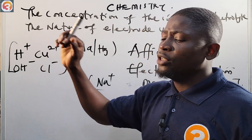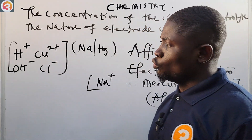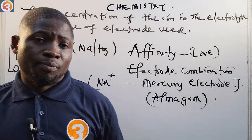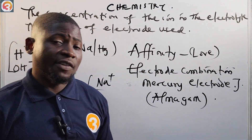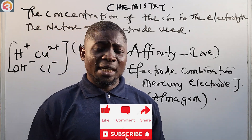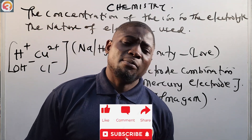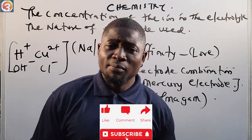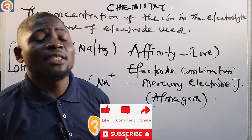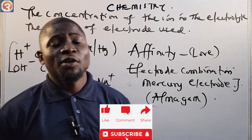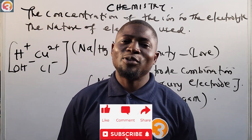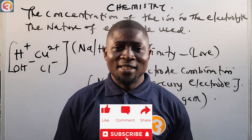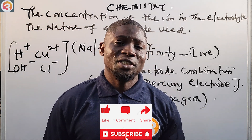So the answer is H⁺ — hydrogen ion is discharged at the cathode because of the issue of concentration, since it is a concentrated solution. Please like and subscribe to the channel. In the next episode we will continue our study on electrolysis. Thank you for watching.